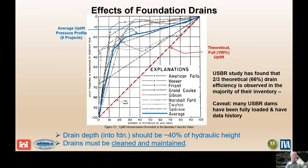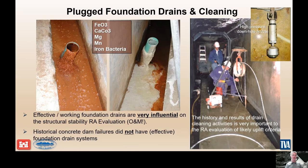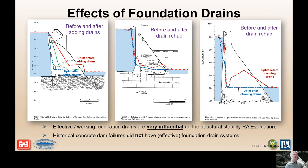Drains must be cleaned and maintained. What we see in this slide are plugged drains in galleries where iron oxide, calcium carbonate, manganese, or iron bacteria can form and plug the drains, significantly increasing uplift. When preparing for a risk assessment, it is very valuable to assess the history and results of drain cleaning, O&M activities, and what the results were from those studies. This diagram shows before and after drain rehab, demonstrating that in many cases you can get improved or reduced uplift conditions if drains are maintained.